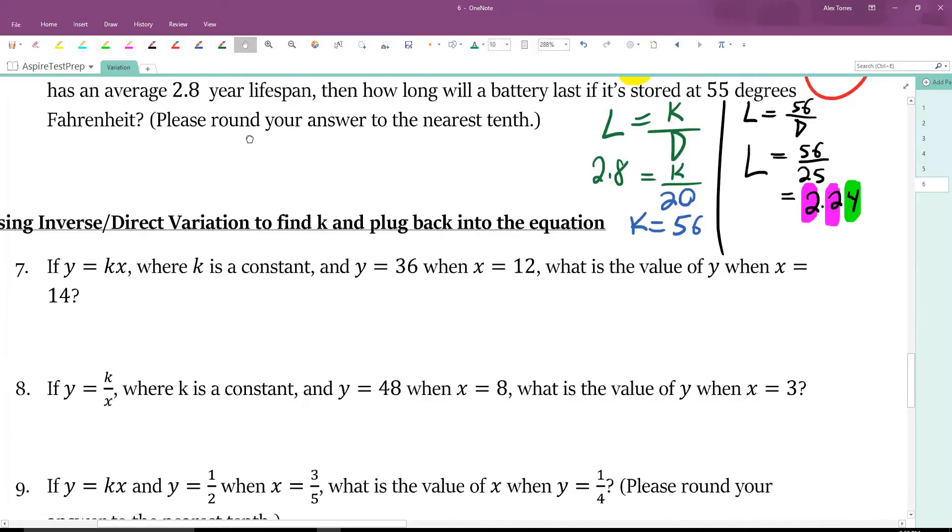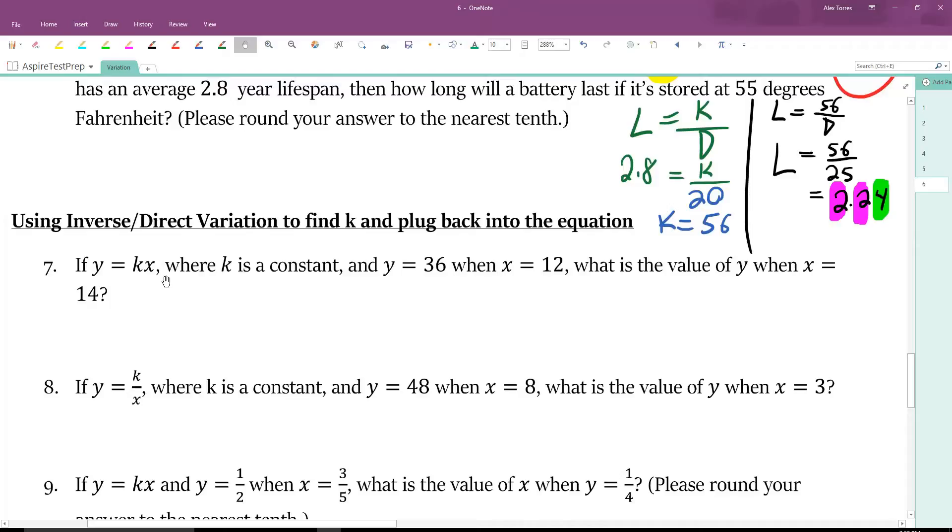Next question. Here, the equations are given to us. Y equals KX. Y is 36 when X is 12. Let's work that out. Y is 36 when X is 12. Dividing both sides by 12, K equals 3. Now we can rewrite. Y equals 3 times X. What's the value of Y when X is 14? Y equals 3 times 14. 3 times 14 is 42. The answer to this question is 42.